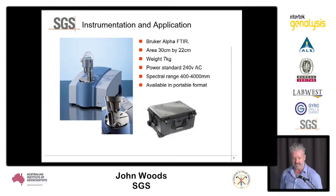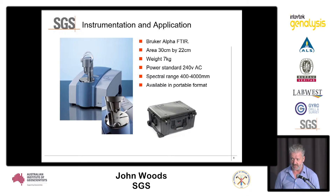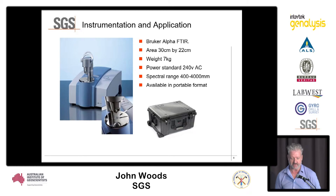This is the instrumentation I'm using — the Bruker Alpha — now used with new advanced detectors, which allows me to get a good spectral response on powdered samples. The samples should be dry and ground to less than 75 microns. The instrument is small, with an area of 30 centimeters by 22 — it fits on an A4 piece of paper. It is utilized in our mobile sample preparation units in combination with the XRF.